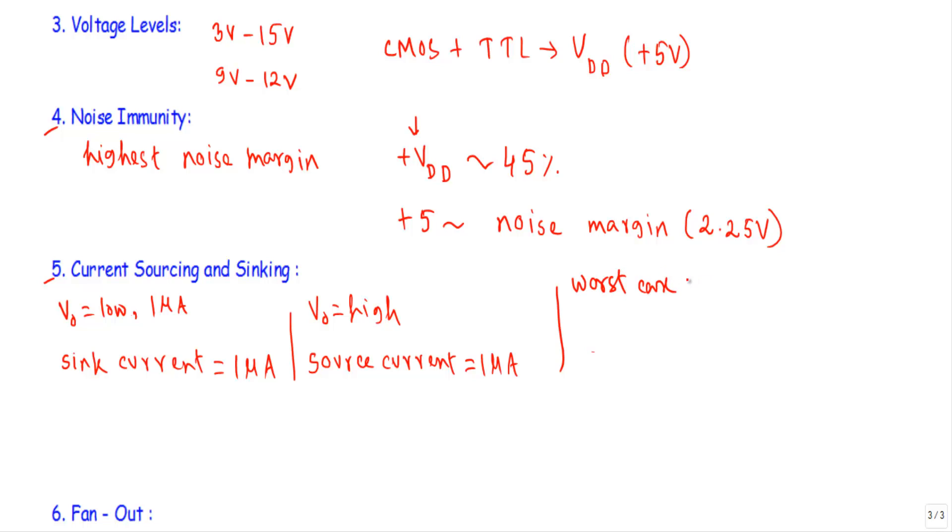In case of input and output currents: IIL max will be minus 1 micro ampere, IIH max will be 1 micro ampere, IOL max will be maximum 10 micro ampere, IOH max will be maximum minus 10 micro ampere.